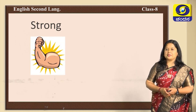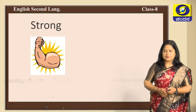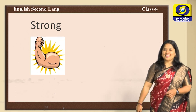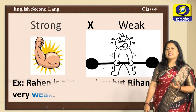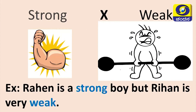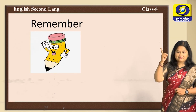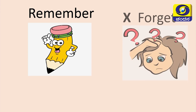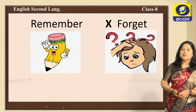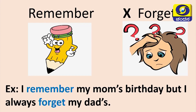What is the antonym of 'strong'? You guessed it right — the opposite word is 'weak.' Example sentence: 'Rahin is a strong boy but Rehan is very weak.' Coming to the next word — what is the antonym of 'remember'? Yes, you are right — that is 'forget.' Example: 'I remember my mom's birthday but I always forget my dad's.'